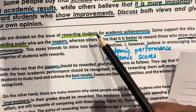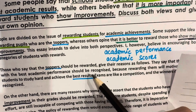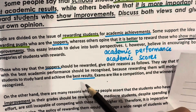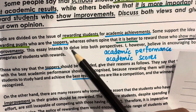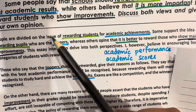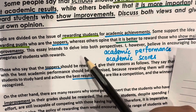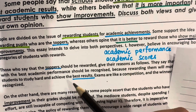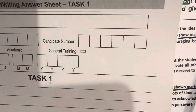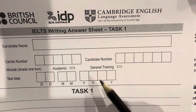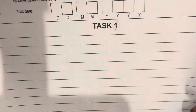The time limit is also very difficult because when you want to write, you don't know how much time goes. If you start making words like this, it will be very difficult for you. So I suggest you take a printout of these answer sheets for task 1 and task 2, and practice on them.